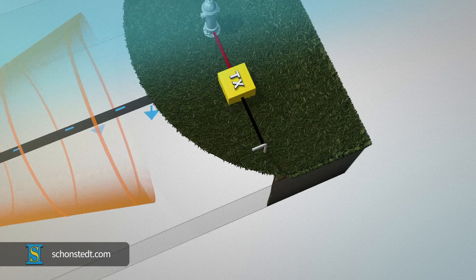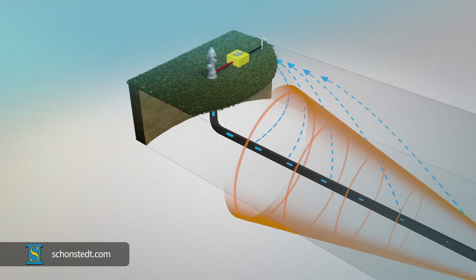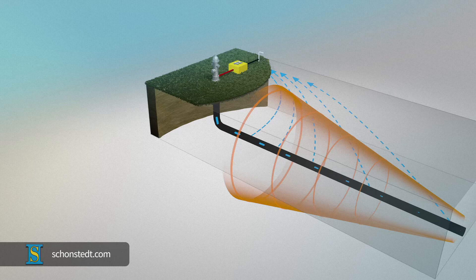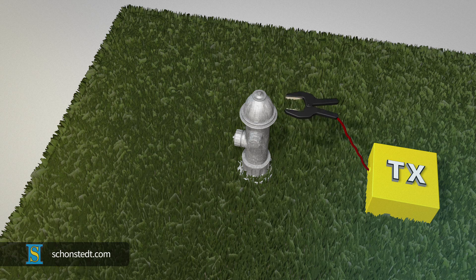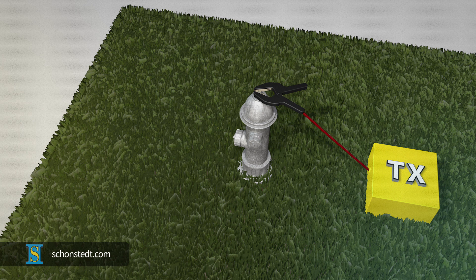With the direct method, you must make a direct connection to the pipe or cable being located. This concentrates the signal on the targeted line. First, take the clip attached to the red cable and apply it directly to the pipe or cable you're trying to locate. Make sure there is a good metal-to-metal contact.